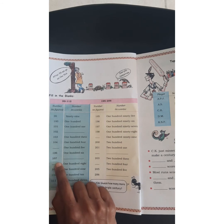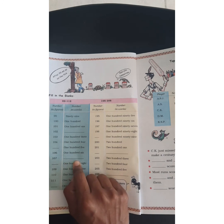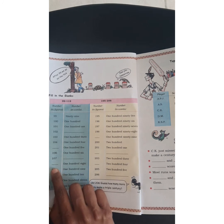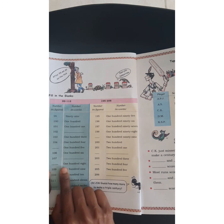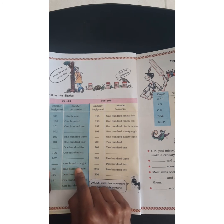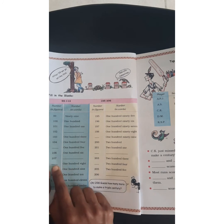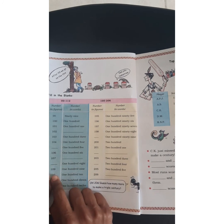107: one hundred seven. 108: one hundred eight — you have to write that. 109: one hundred nine. 110: one hundred ten — that is 100 and 10.